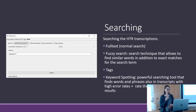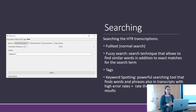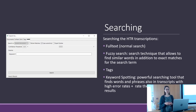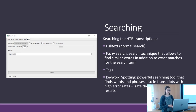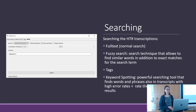Keyword spotting is more powerful than the fuzzy search because it enables you to search words and phrases even in transcriptions with high error rates. Even if the transcription is only 80% or 70% correct, it helps you find words.